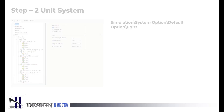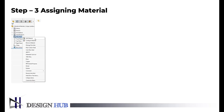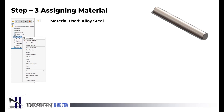Step 3 is assigning a material. The major objective of material selection in the context of product design is to minimize costs while achieving product performance goals. We will use alloy steel and 2014 T6 aluminum for the cylindrical and rectangular members, respectively.